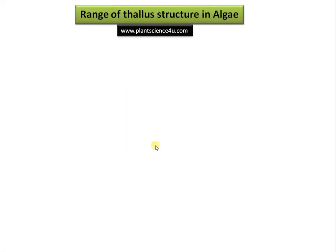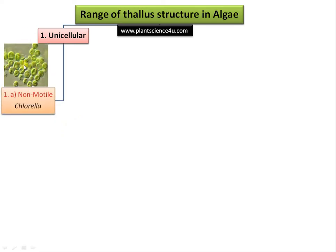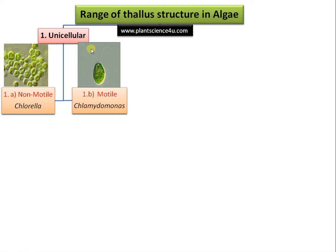Now let us discuss the amazing diversity in the structure of this beautiful group. In the case of algae, there are unicellular, multicellular, filamentous, and up to parenchymatous forms. Starting with unicellular algae — there are non-motile algae like Chlorella, and diatoms which are also non-motile. Then there are motile algae like the classical Chlamydomonas, where you can see the flagella.